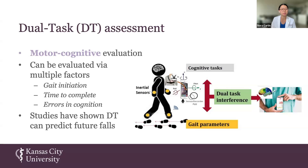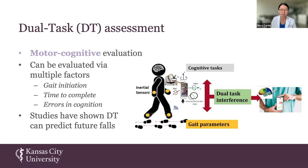Dual task is an assessment used in clinic and laboratory settings to evaluate the combination of motor and cognitive ability. In this photo, you can see a person being studied walking while being told to do some sort of cognitive task — for example, walking 20 meters while counting backwards from 100 by sevens. You can evaluate various gait factors: how long it takes to initiate gait, how long it takes to complete the distance, as well as errors in cognition, lateralization while walking, and balance.